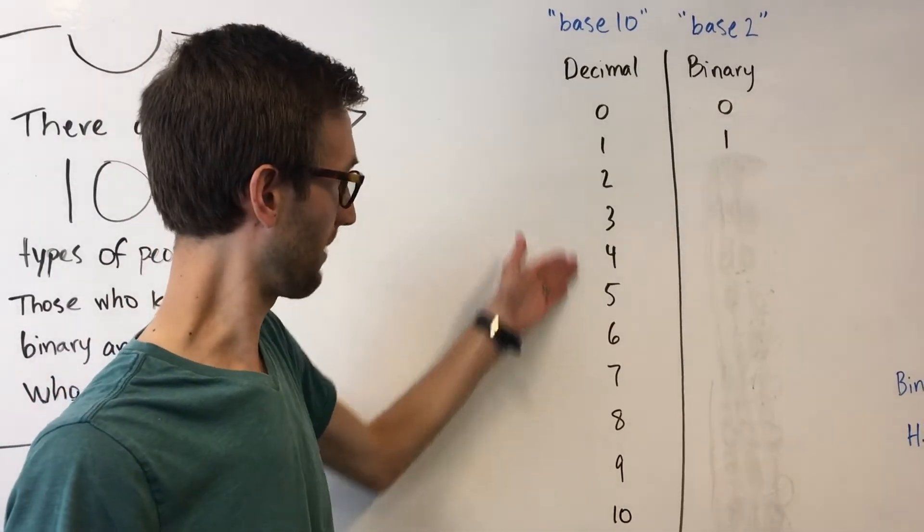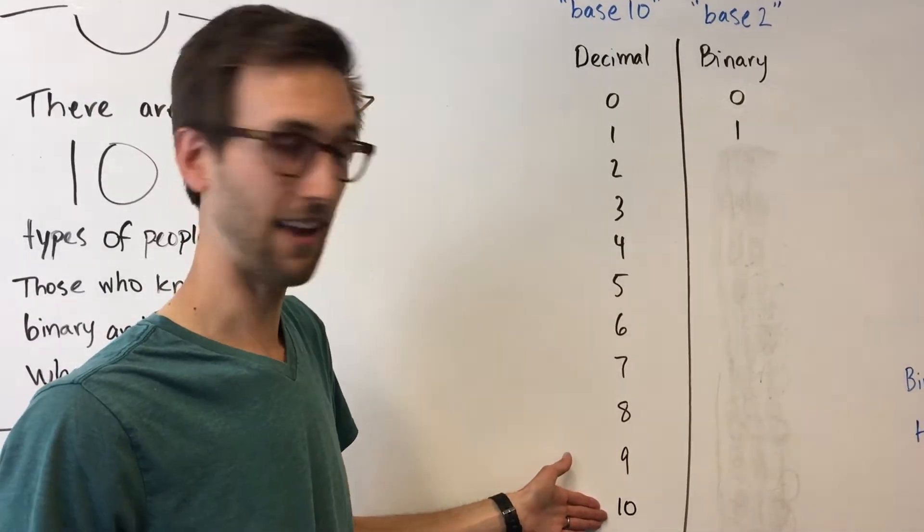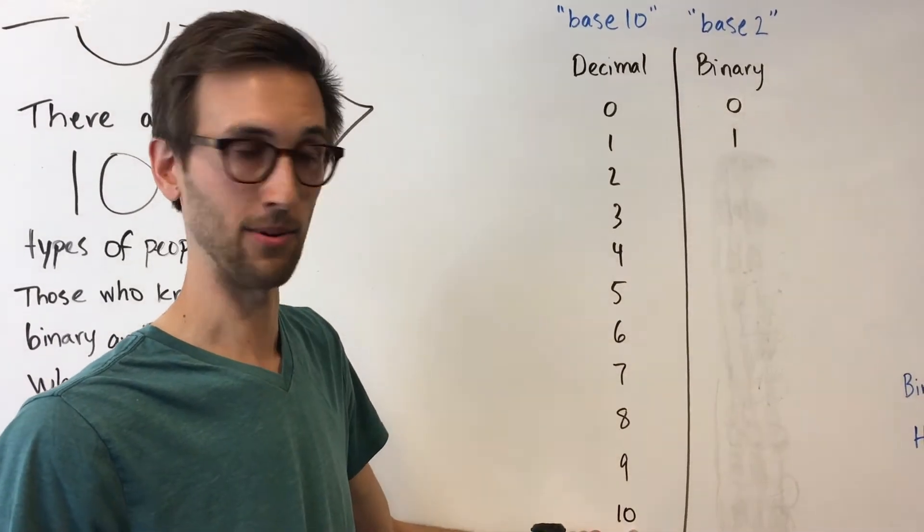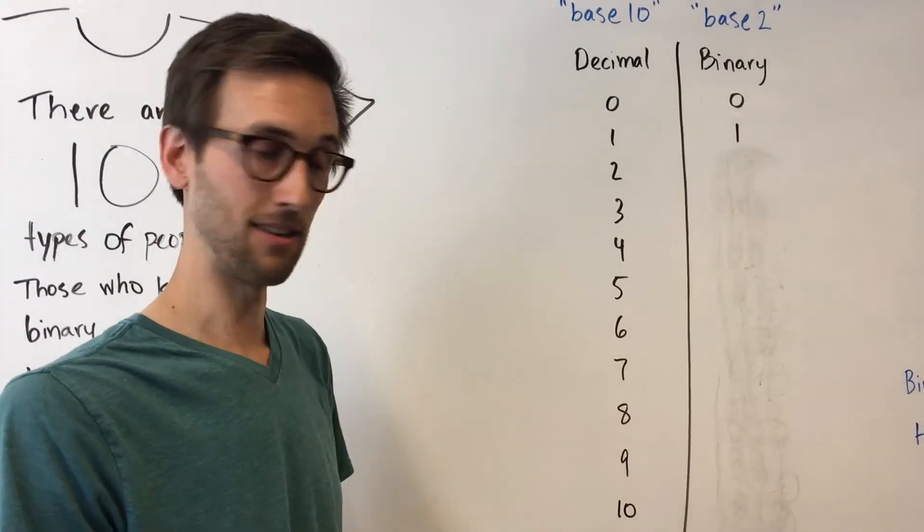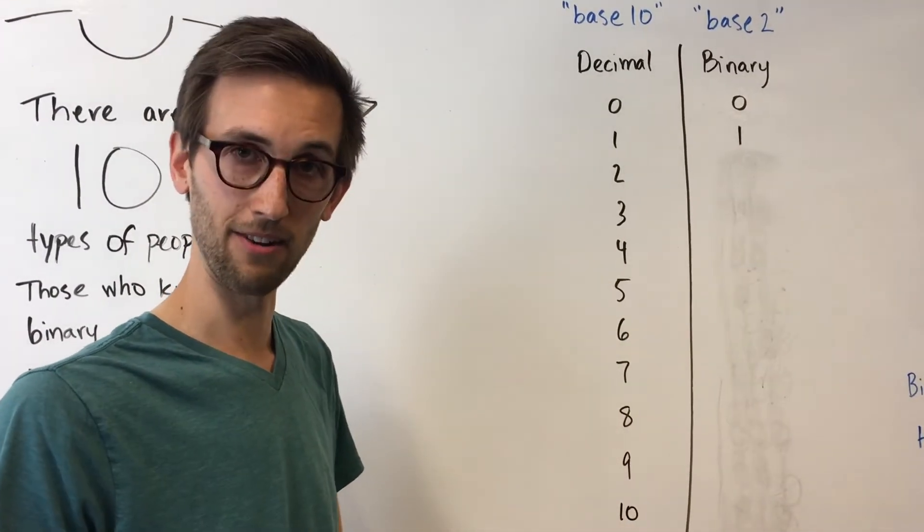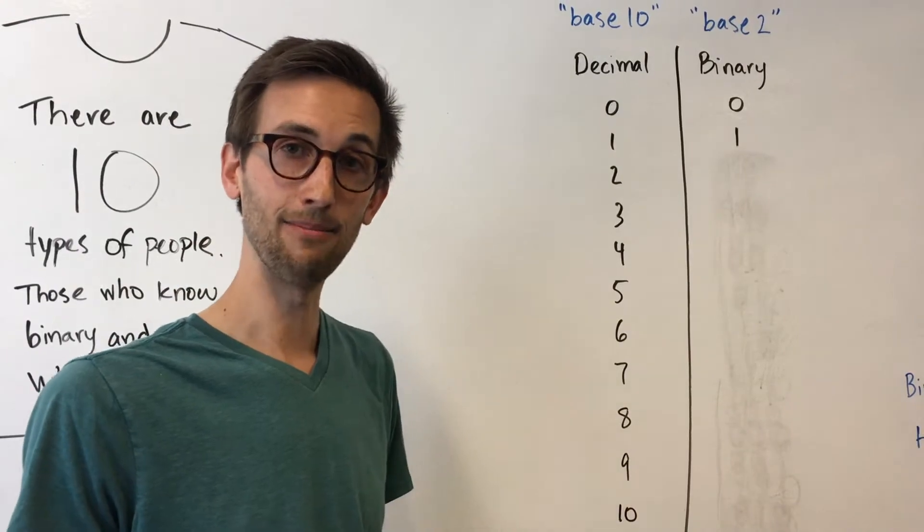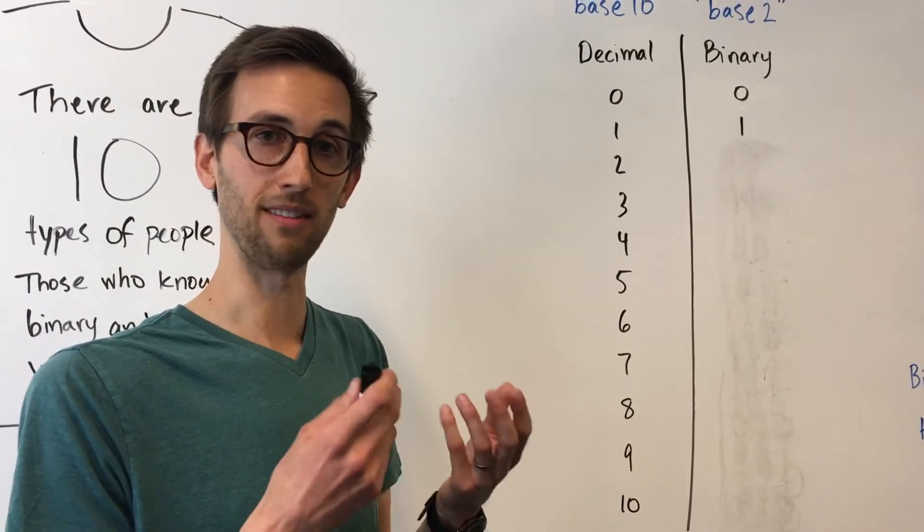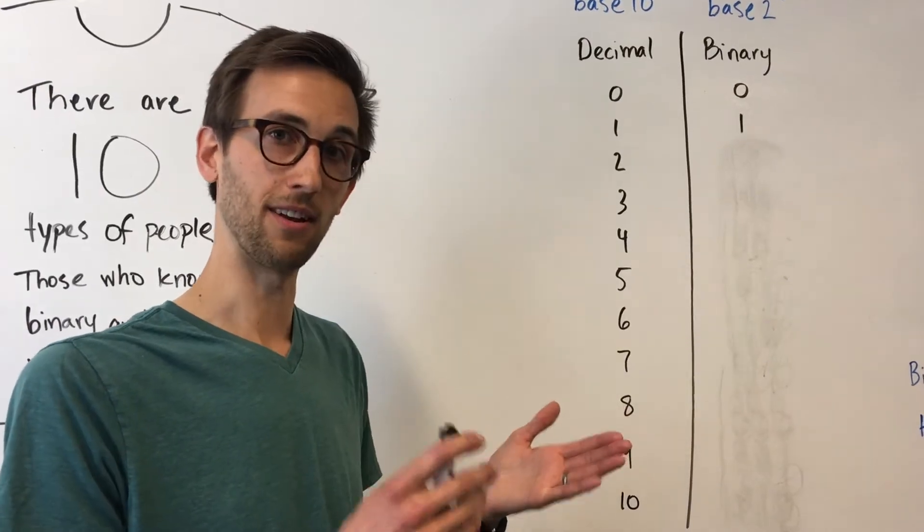When we exhaust them all in counting, then we have to add a new digit, which is why we put the one and zero next to each other. After that we continue counting, eleven, twelve, etc. until we get to ninety-nine. Once again we've used all the possible combinations of two different symbols together. We have to go to a third digit and write one hundred.